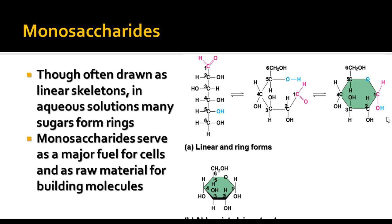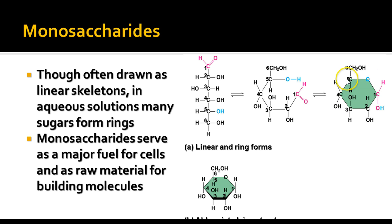Monosaccharides are the major fuel for cells, and they're also the raw material for building bigger molecules used for lots of different things. This is a form of glucose, and you'll see the ring structure shows the location of all the different functional groups attached there.